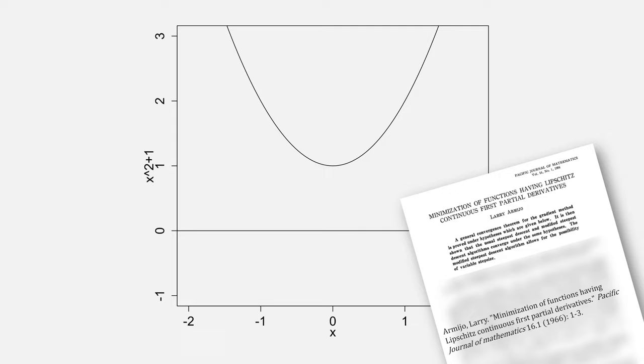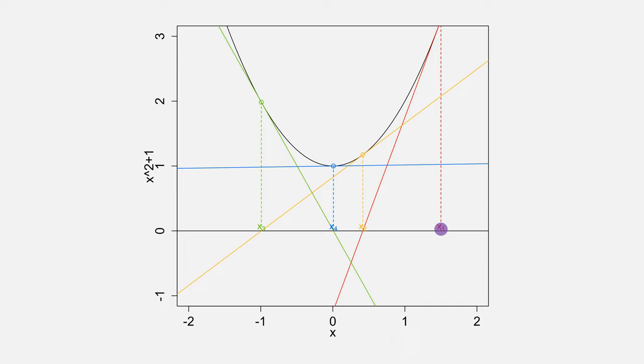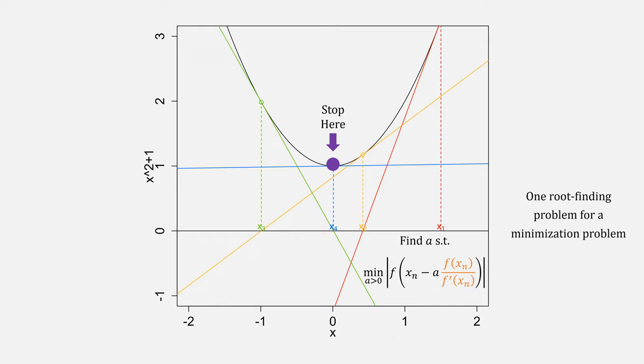There's also the problem of when Newton's method doesn't have a solution, and this is what Armijo was looking into. In this example, starting from any point, it will eventually converge to a minimum, and then shoot off to infinity. What we really want is for Newton's method to stop right there, meaning we want a value for A which will minimize this function. Of course, that means we've now changed a root-finding problem for a minimization one. Or have we?